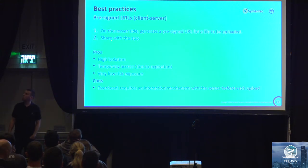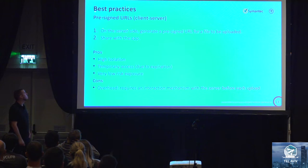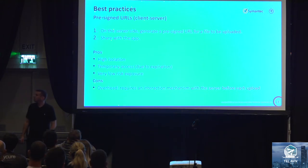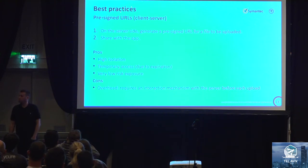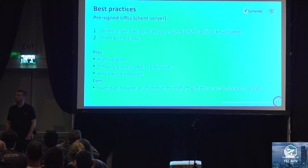How can we resolve this? One option is to use pre-signed URLs — a feature supported by AWS where you generate a unique URL to a specific file. It has a signature, an expiration date, and is extremely secure. You can upload a single file to that location and it expires after a time. The overhead is that you still need to talk from the client to the server for each file you want to upload to get this unique URL and permission.